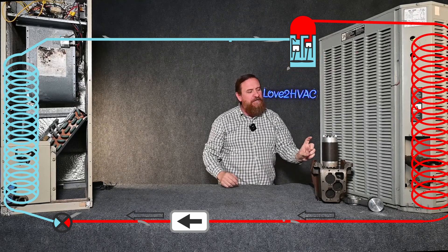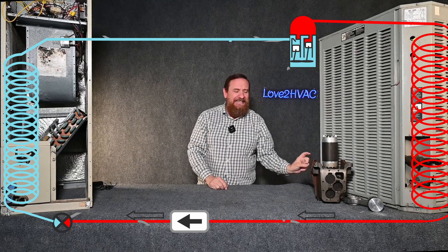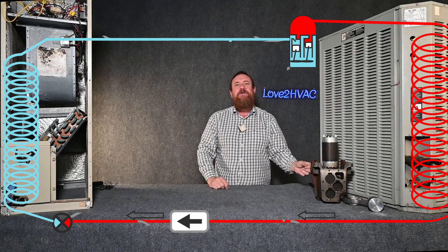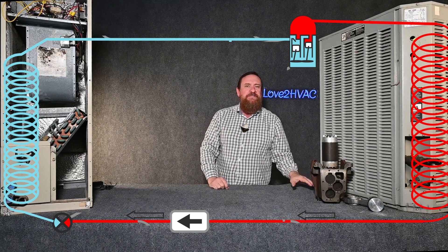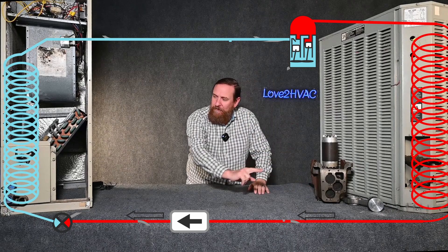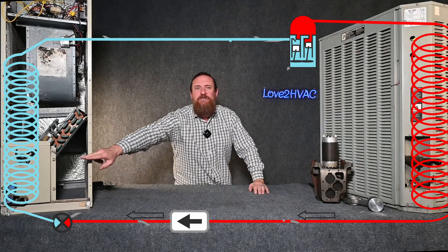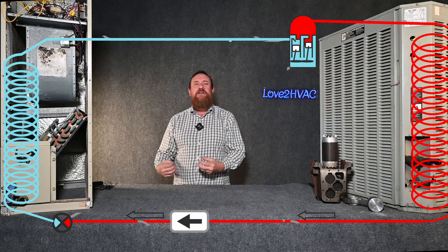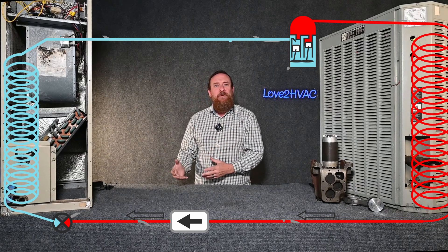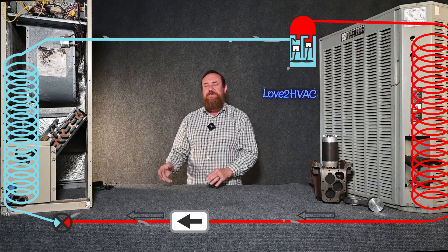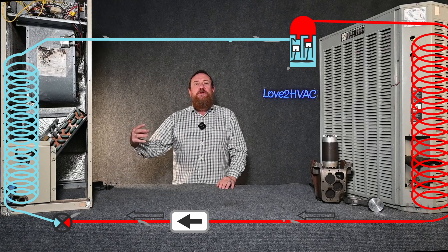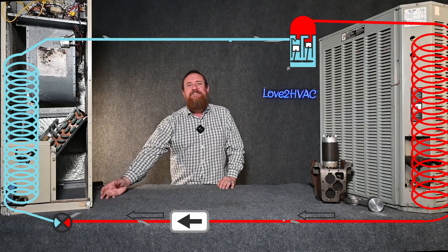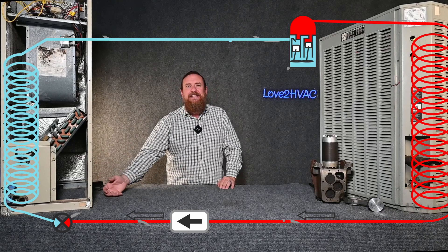Latent heat is taking place. Then we're going to sub-cool it — that last little bit of the condensing coil, we sub-cool that liquid below saturation. We send that sub-cooled liquid into our metering device. Our metering device drops the pressure, and by dropping the pressure, we drop the boiling point, dropping the temperature of the refrigerant in the evaporator. The refrigerant is now boiling inside the evaporator, absorbing heat.